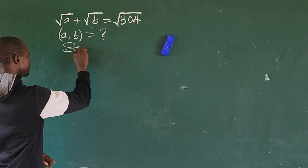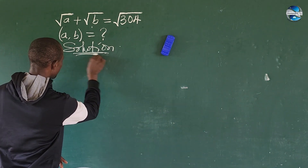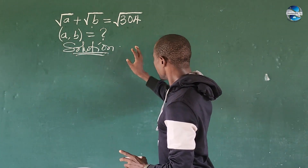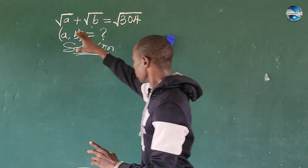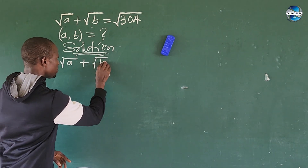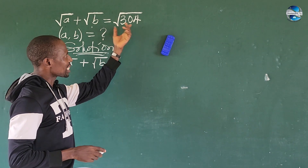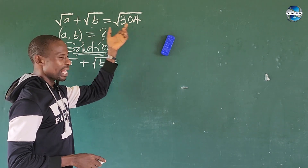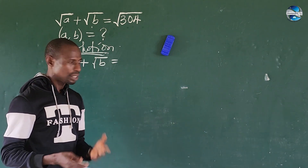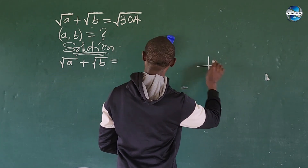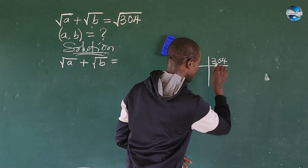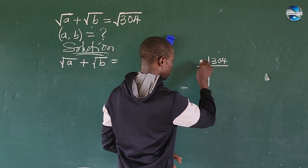The first thing we do is work on the right-hand side of this equation. We keep the left side as square root of a plus square root of b, and simplify the right side. Keeping in mind that this is a square root radical, we need to divide 304 to a point where we can have a perfect square factor. Two can go into this.